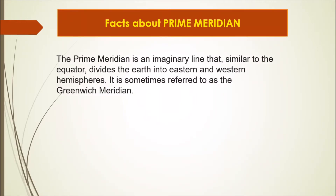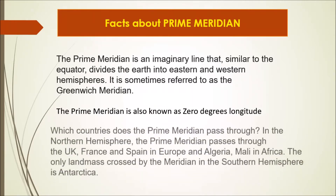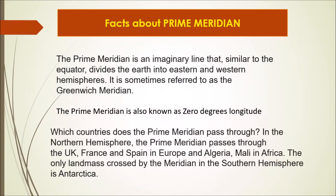The prime meridian is an imaginary line that, similar to the equator, divides the Earth into eastern and western hemispheres. It is sometimes referred to as the Greenwich meridian and is also known as zero degrees longitude.